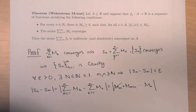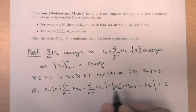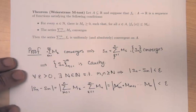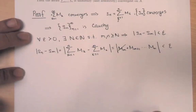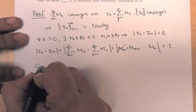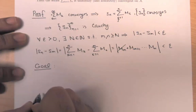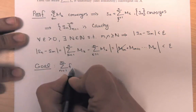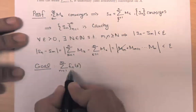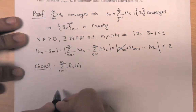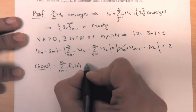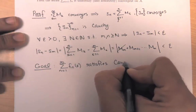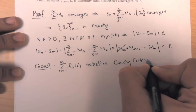So we're left with just m_{m+1} through m_n, and that sum is less than ε because this equals the difference of partial sums satisfying the Cauchy criteria. Now our goal is to prove that the function series is uniformly convergent. We're going to do that by showing the partial sum sequence of functions satisfies the Cauchy criteria.